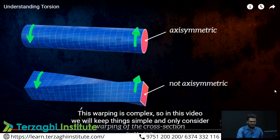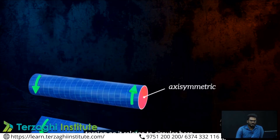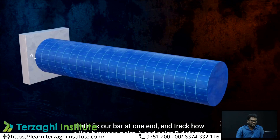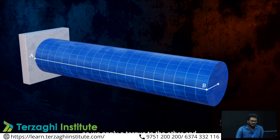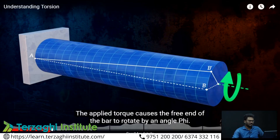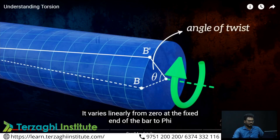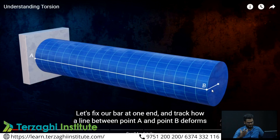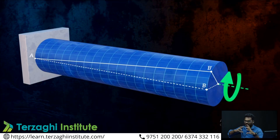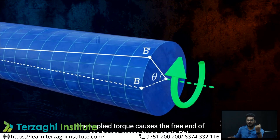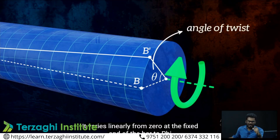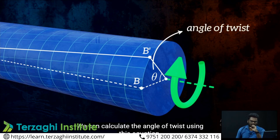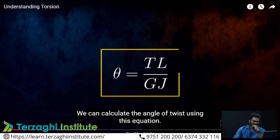Under a torsion twisting moment, the cross-section warps. The angle of twist — the angle made by the original position with respect to the twisted position — is known as the angle of twist, theta. So theta is equal to TL divided by GJ.